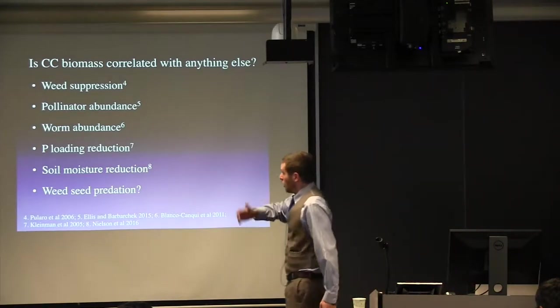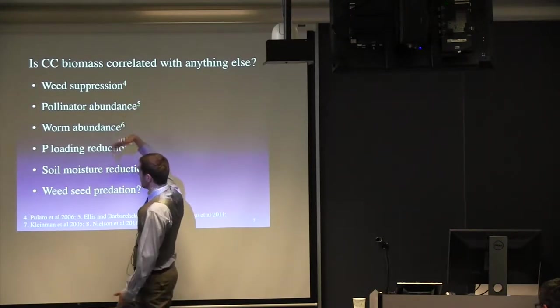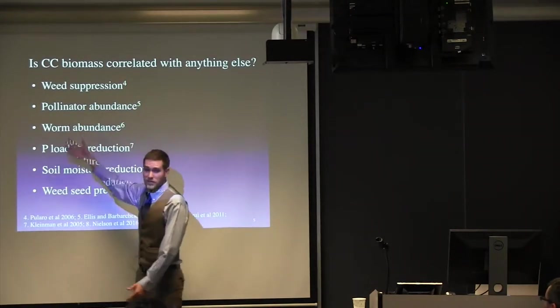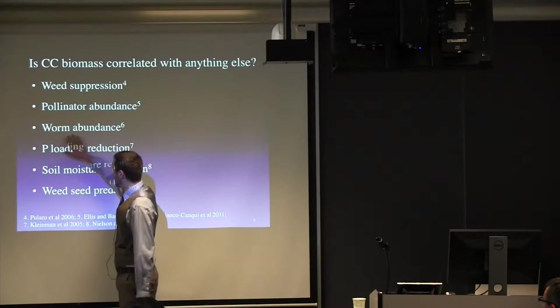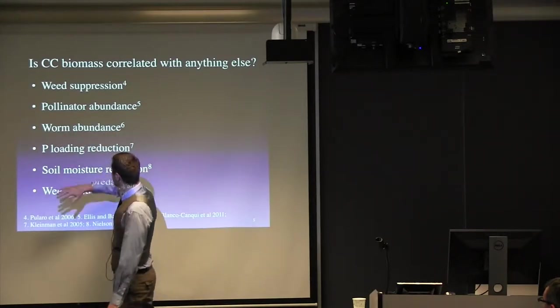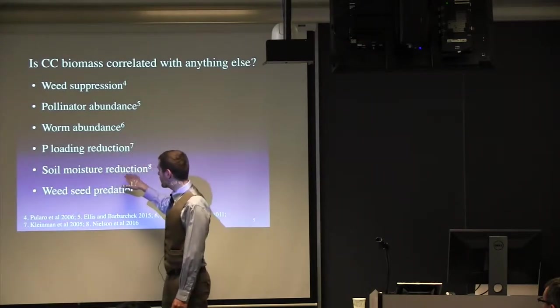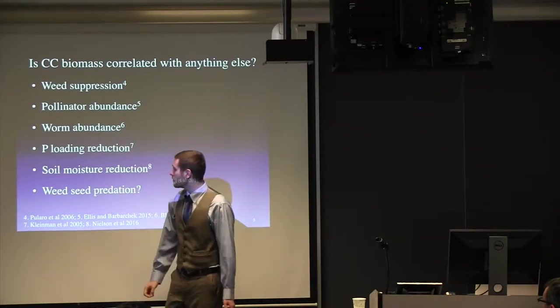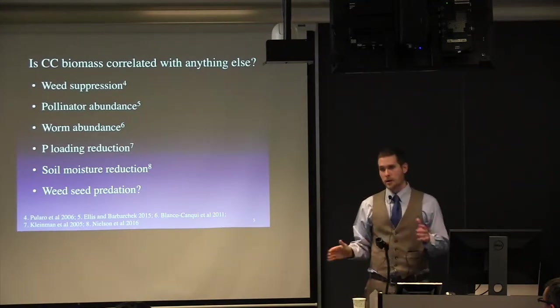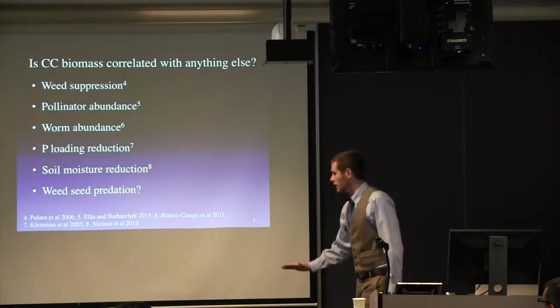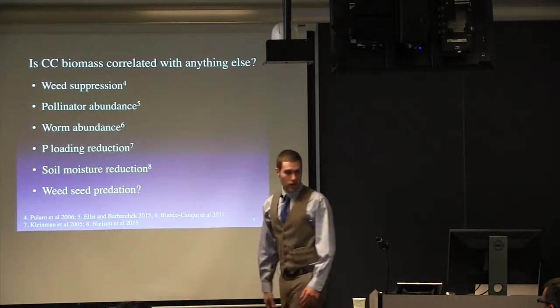So cover crops, there's a positive correlation with weed suppression. The more biomass of your cover crops you get, fewer weeds. If you grow something like vetch or clover in your mixture, they're going to put out a lot of flowers to attract pollinators. Those nice thick root systems increase worm abundance, reduce phosphorus loading. The one downside is the more cover crop biomass that you have, you have a reduction in soil moisture. So this is typically why as you go to drier areas, cover crop utilization is a little bit less. And maybe seed predation, we're going to get into that a little bit later.